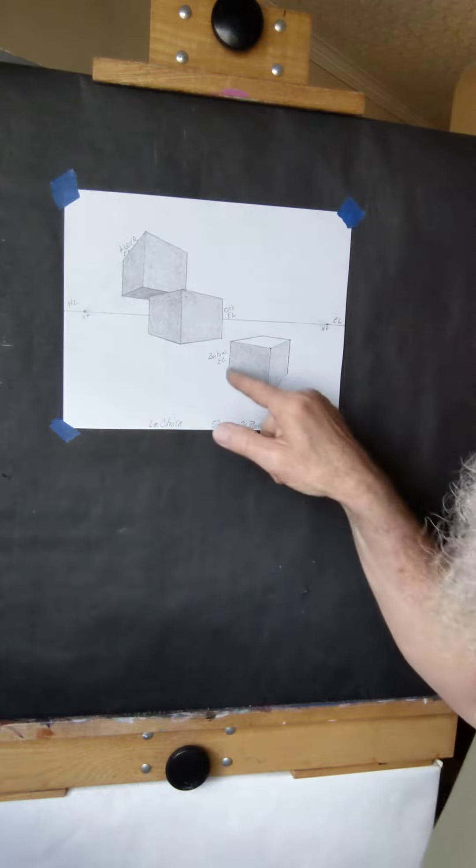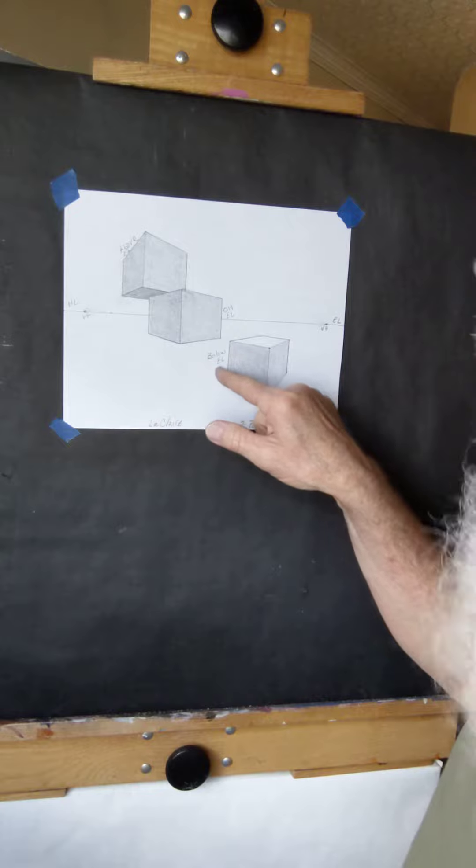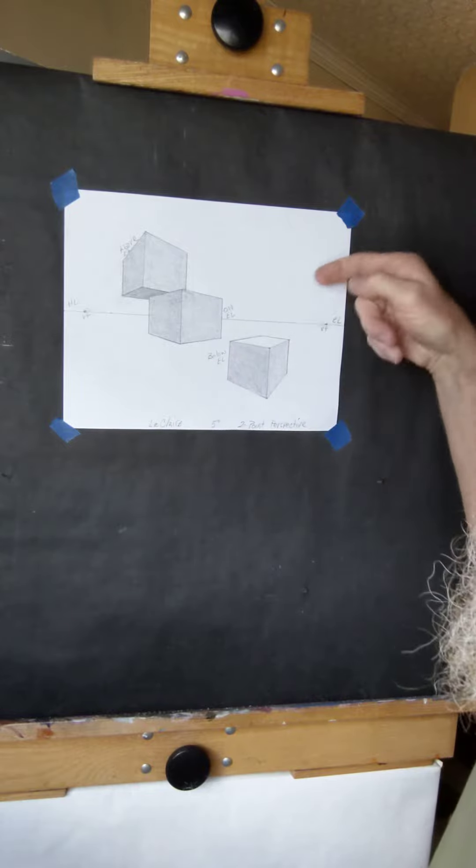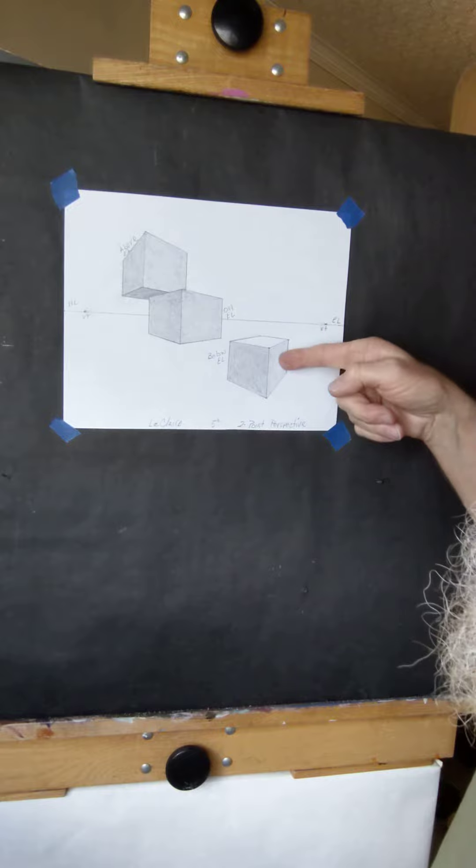All the boxes should be labeled. This one is below eye level, so it's below EL as labeled. This face is getting more light, so it's lighter here. This one's getting a little less light,